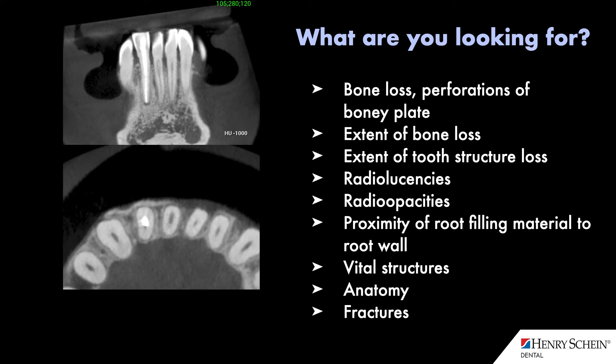The CBCT can also tell us if there are any concerns with the root canal filling itself, such as voids and missed areas like fins and other missed anatomy, if there are additional curvatures such as a particular apical exit, and especially if there are periapical radiolucencies — we can see if the canal is associated with that radiolucency, which can actually tell us if there may be lateral canals as well.